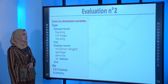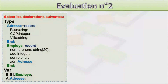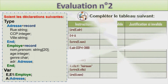Deuxième évaluation : on a la déclaration des types adresse (champs : rue, ccp, ville) et employé (champs : nom, prénom, âge, genre, ADR de type adresse). Les variables E et E1 sont de type employé, A de type adresse. On doit compléter un tableau indiquant si chaque instruction est valide ou invalide.